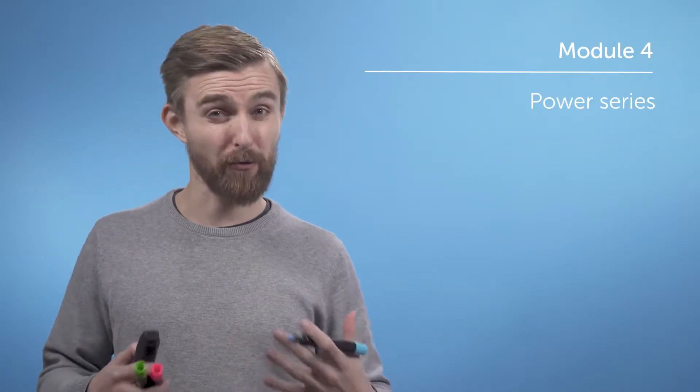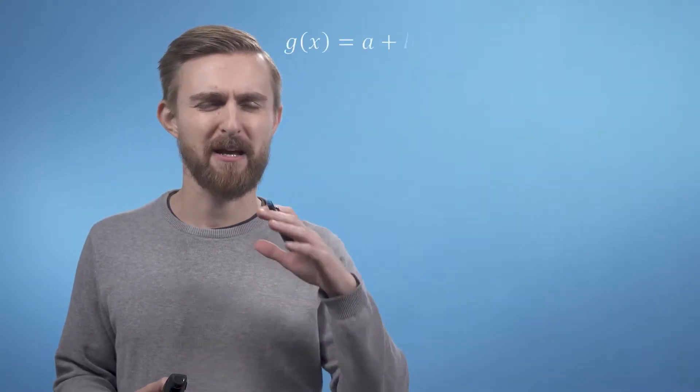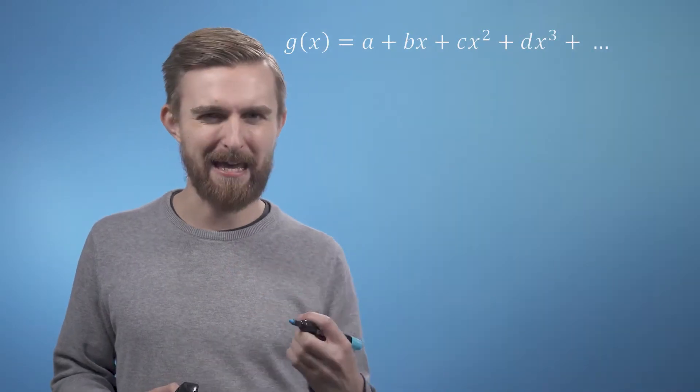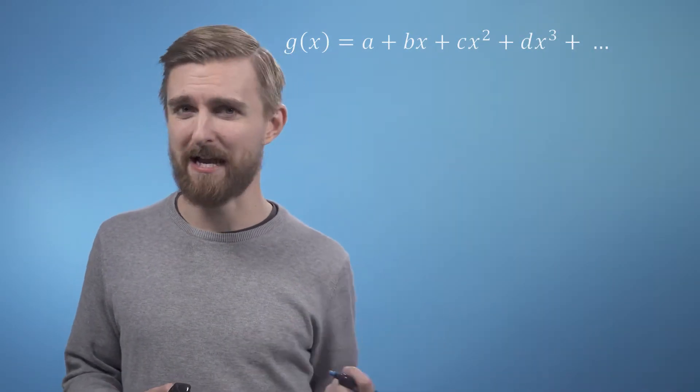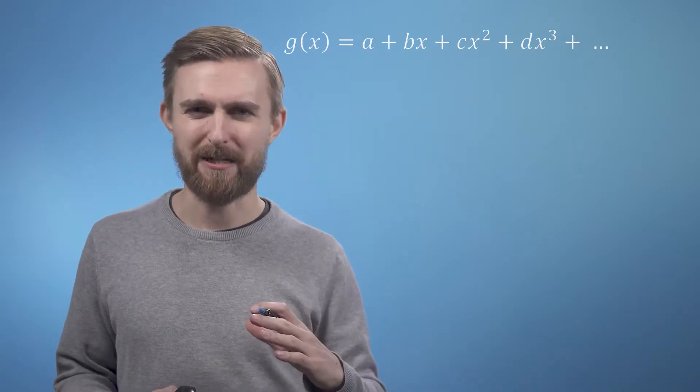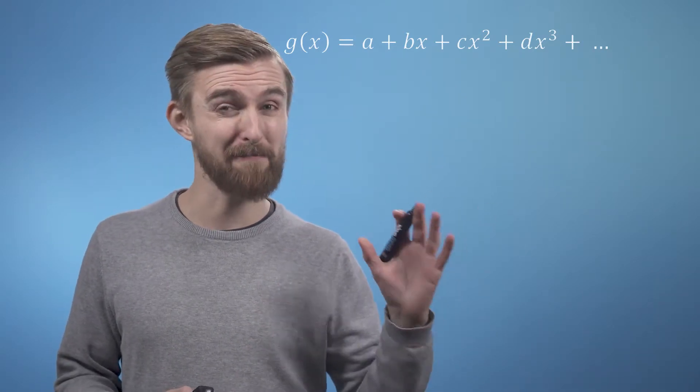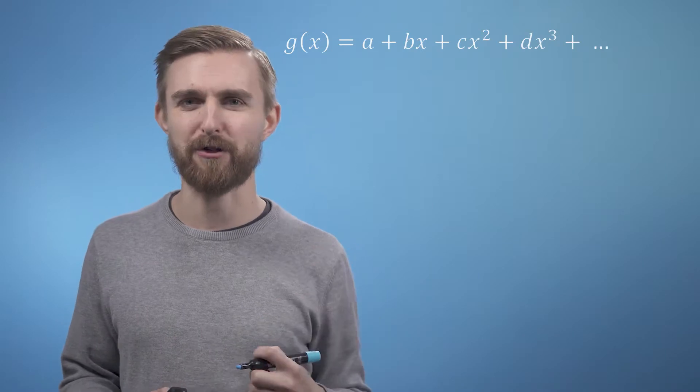Taylor series are also referred to as power series, and this is because they are composed of coefficients in front of increasing powers of x. So we can write a simple generalized expression for a power series as g(x) equals a plus bx plus cx squared plus dx cubed, etc., potentially going off for infinitely many terms depending on what function we're considering.